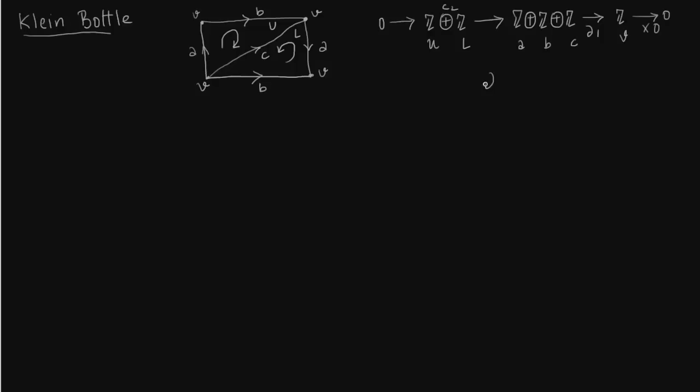So we need to determine this map delta 1. Delta 0 is always multiplication by 0. What is delta 1? So delta 1 of A is V minus V, which is two vertices, which is 0. Same for delta 1 B and delta 1 C. There is just one vertex. So we don't have to worry about anything.